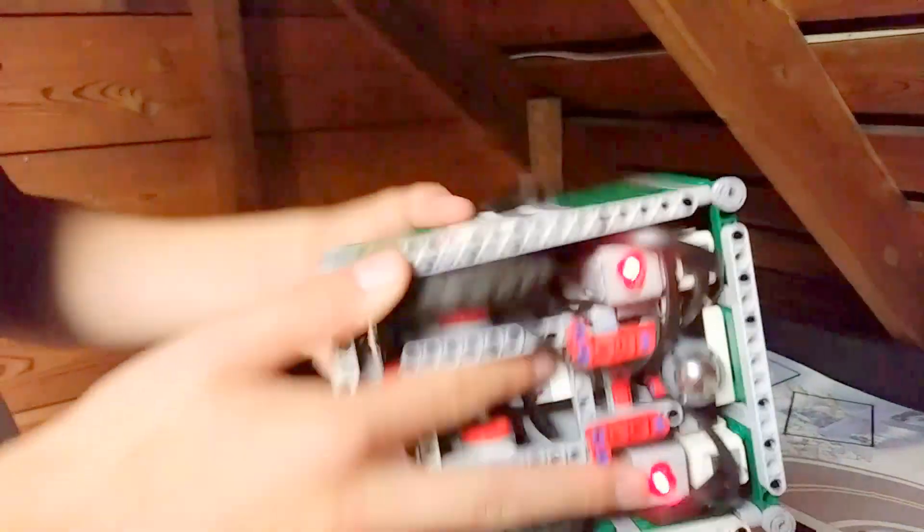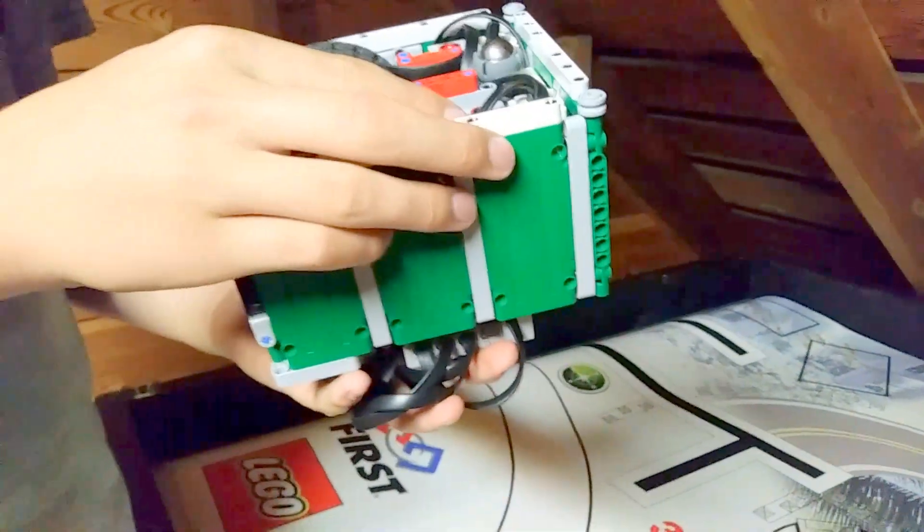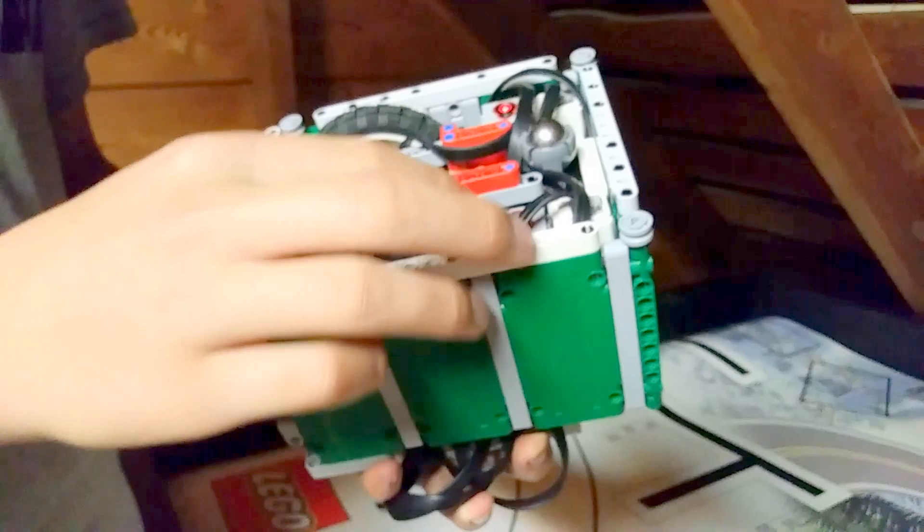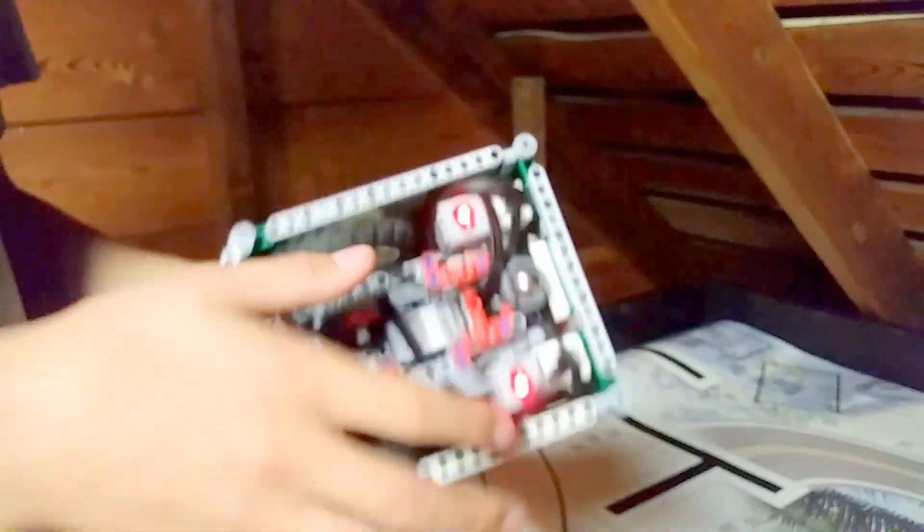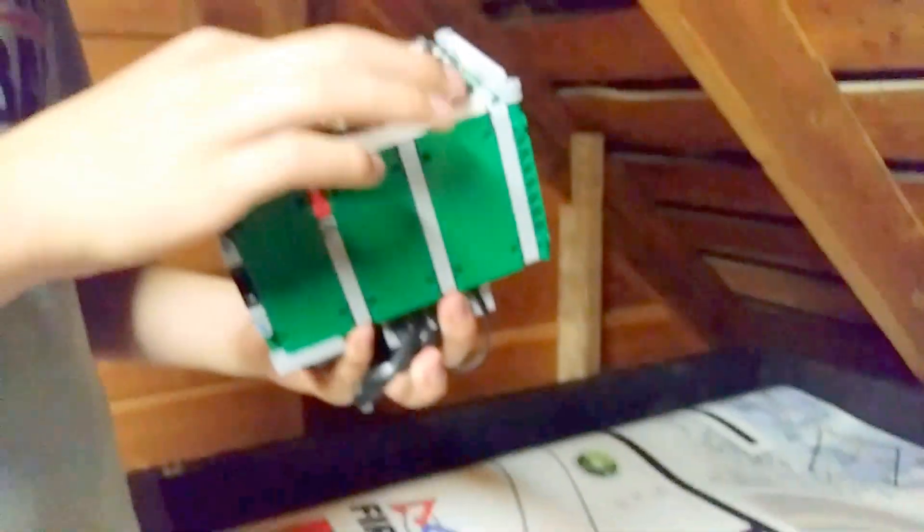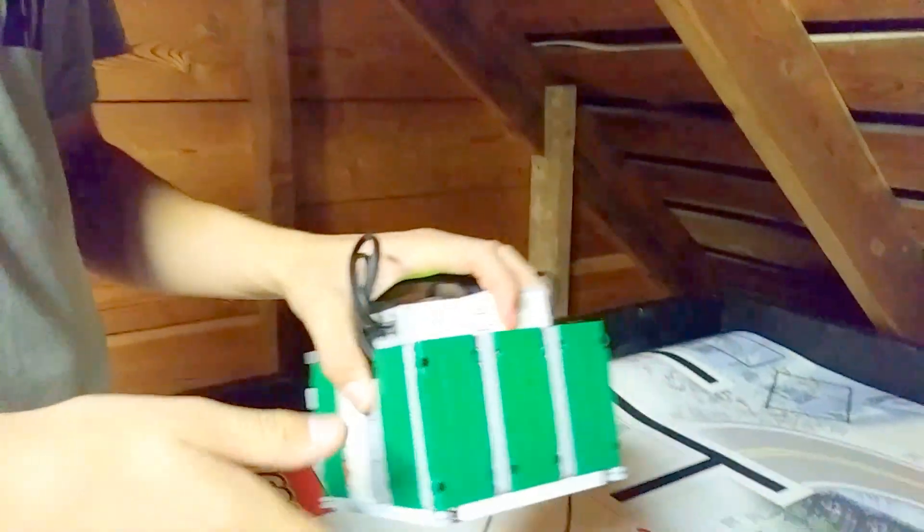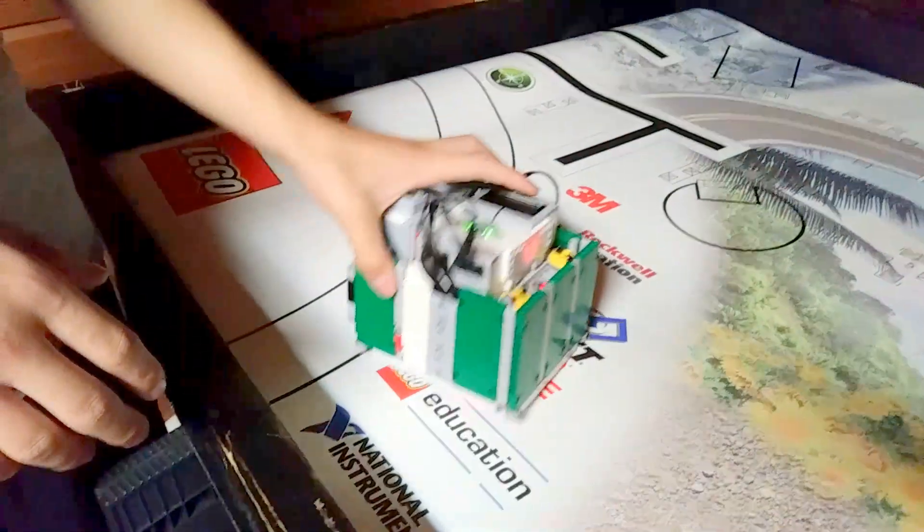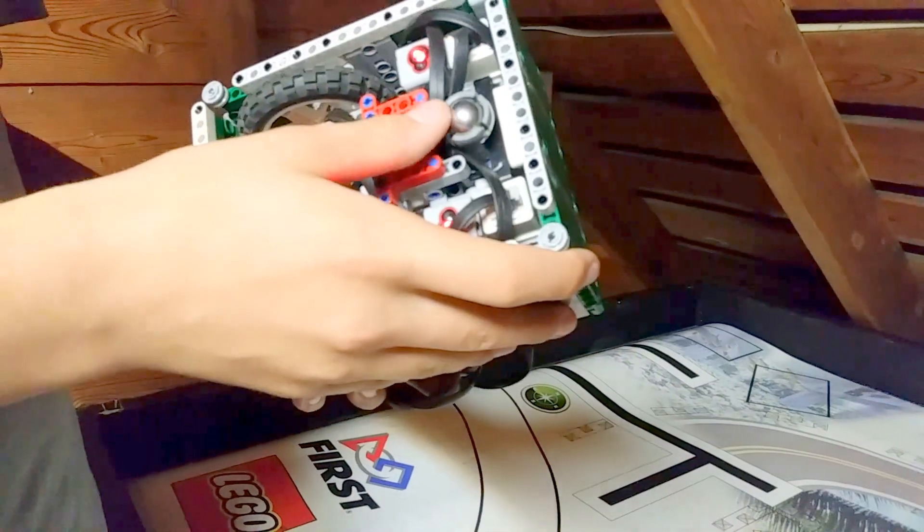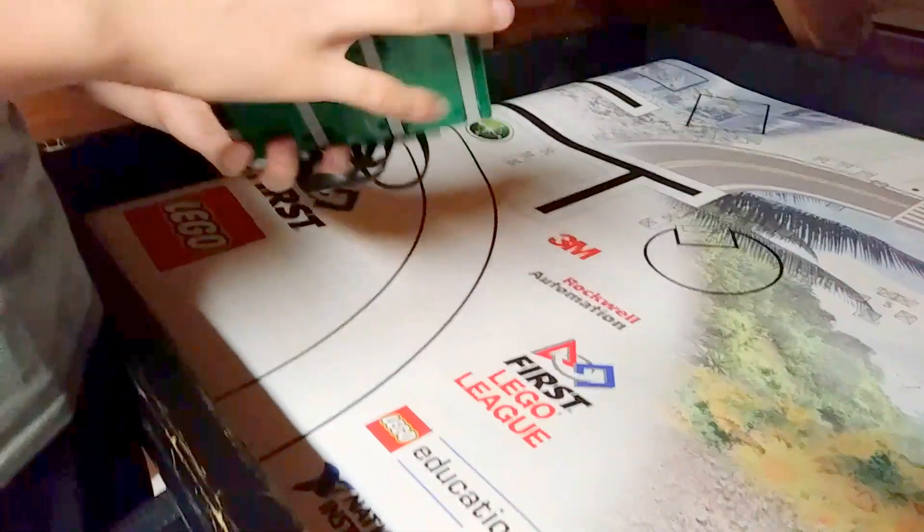We have our two line color sensors so we can follow lines, stop at intersections, and square to the lines. The marble makes it so we can turn more easily because it's like a third wheel that can rotate in all directions.